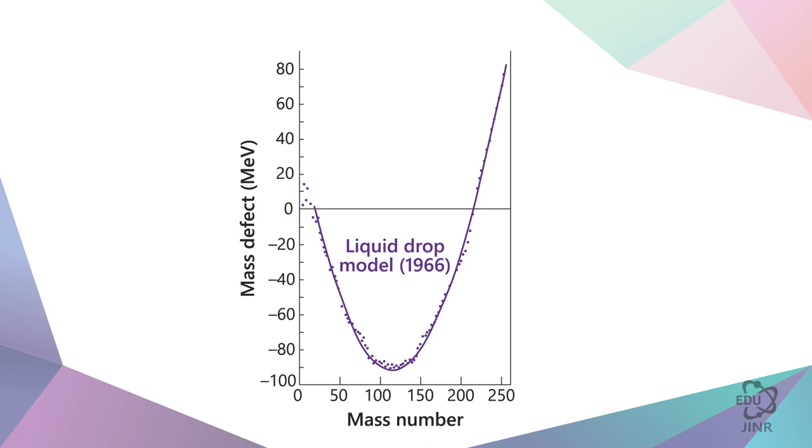All the experimental points that are drawn here show the mass of the nucleus, or more precisely, its mass defect, from the lightest to the heaviest, which is uranium and even transuranic elements. And this line shows the calculation of the liquid drop model. It is very clearly depicted.